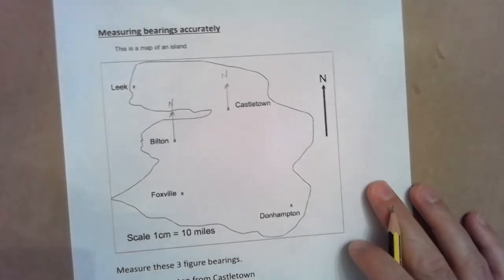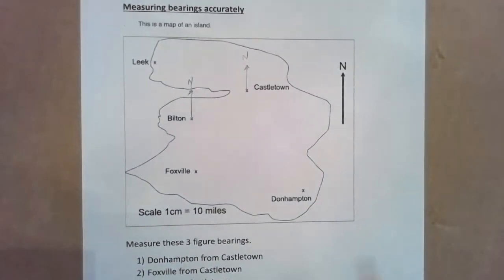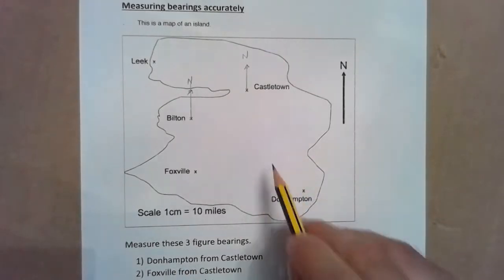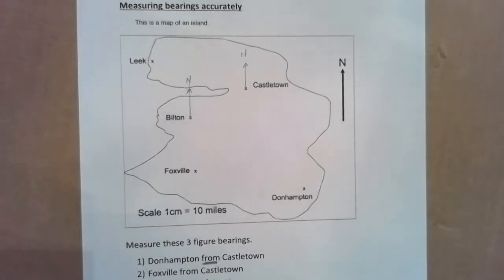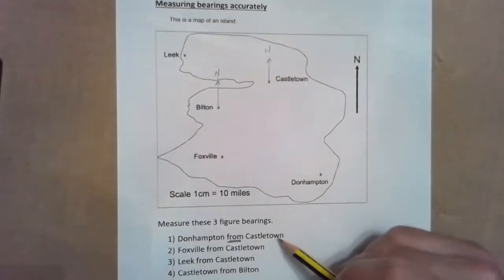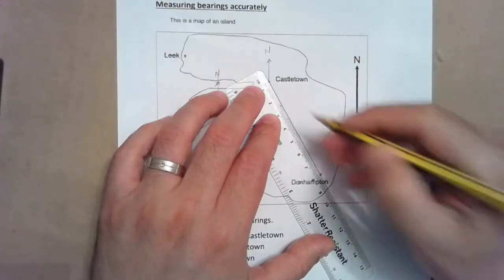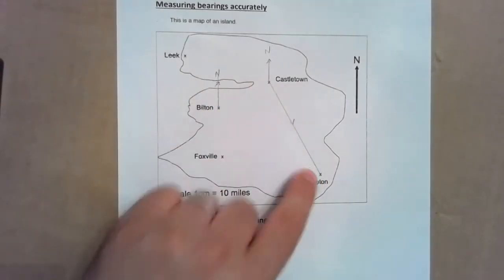Let's go through some examples. We have to measure bearings accurately, so we're going to measure the bearing of Don Hampton from Castletown on this map. That word 'from' is important — Castletown is here and Don Hampton is here, so we're going in this direction.